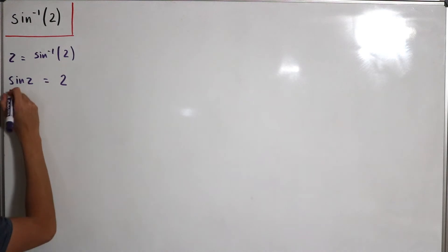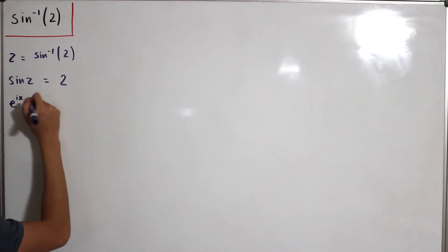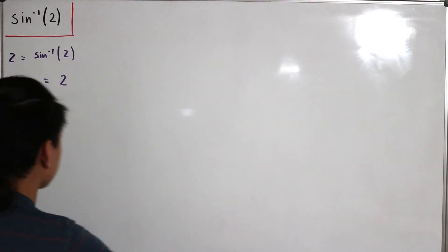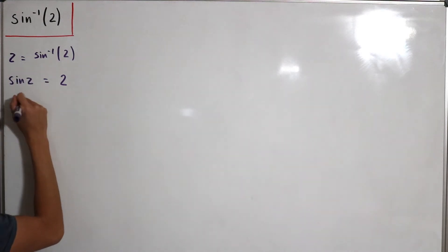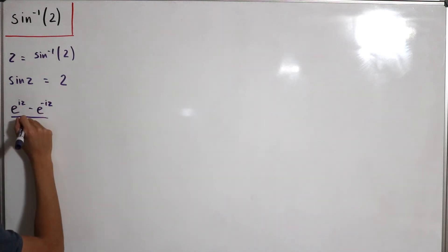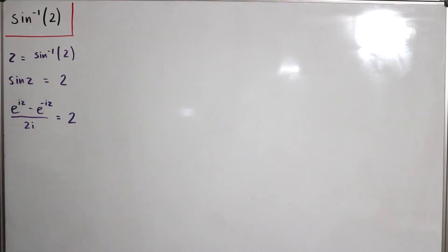Which is defined as e to the power iz subtract e to the negative iz, divided by 2i, and then we set that equal to 2. And now we can actually just solve this to get our variable z on its own.